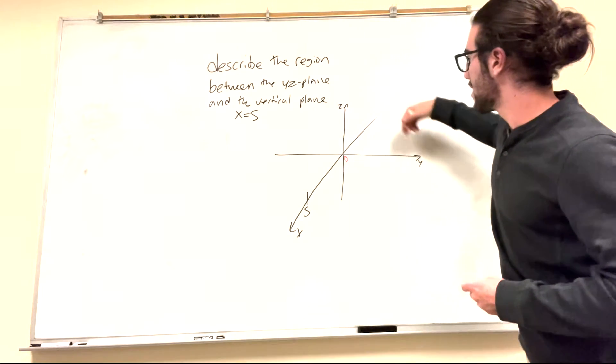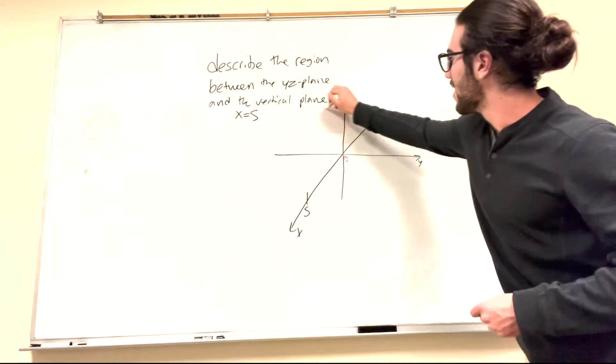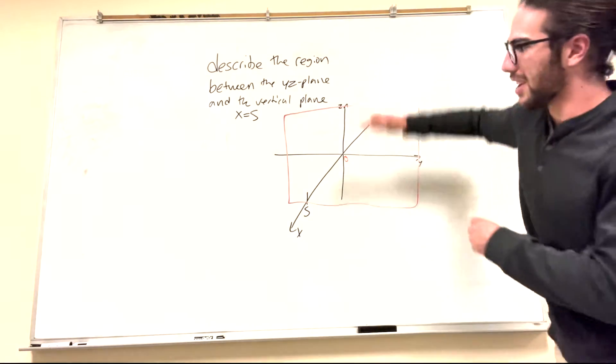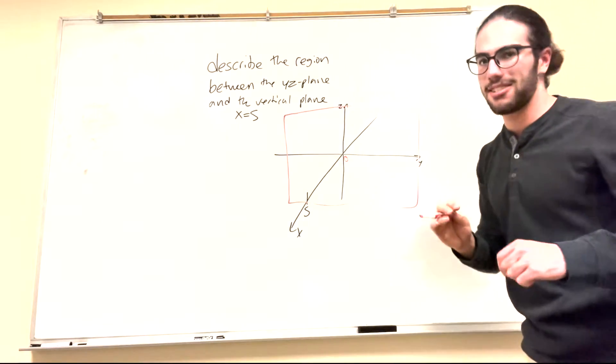So anywhere on the yz-plane, x is going to be equal to 0. That can include any of these values. And it goes on infinitely on the z-value up and down, and infinitely on the y-value, as long as x equals 0.